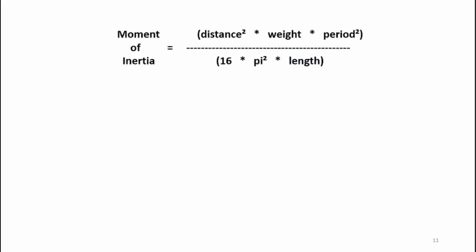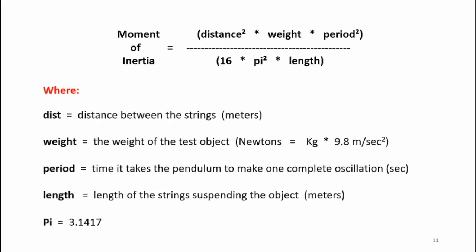Now here's the equation for calculating the moment of inertia. I have distance squared times the object's weight times the period squared divided by 16 pi squared times the length of the strings. Now here are the parameters and the units that are used. Distance is in meters, weight is in newtons, period will be in seconds, length will be in meters, and of course pi, 3.1417.